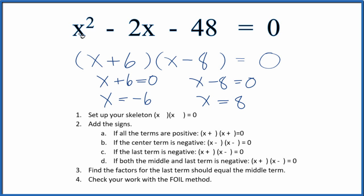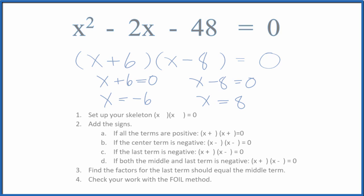This is Dr. B factoring the equation x squared minus 2x minus 48 equals 0. Thanks for watching.